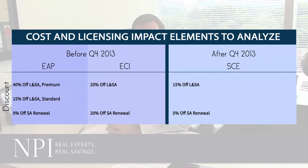The key things to be aware of here are that many of the discounts that were formerly available are now changing. In fact, in many cases we think this will lead to a cost increase for most of our clients by as much as 40%. One example of that is the former discounts under the EAP program were 40% and those are now going down to 15%. Enrollment for Core Infrastructure discounts for License and Software Assurance were 20% and they are now going down to 15% as well.